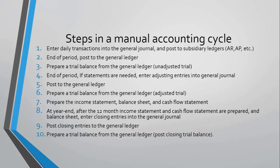First, let's look at the steps in a manual accounting cycle, like a three-step waltz. Daily events are recorded — there's often a source document, a bill received or paid, that triggers the entry. It's put into the general journal. We update the subsidiary ledgers, which are very detailed records about customers that owe us money and suppliers that we owe money to, so it makes sense they should be updated on a regular basis.